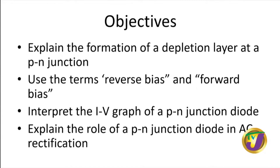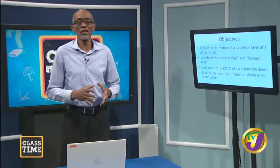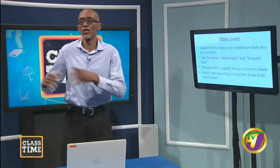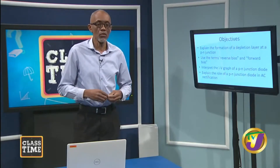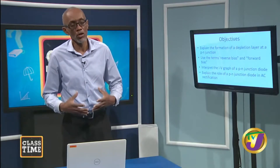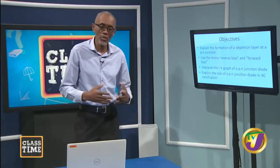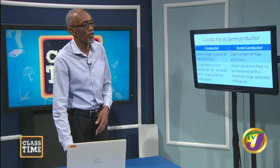First of all, we want to define a semiconductor. The word semi suggests half — half conductor, or semi suggests part conductor. So when we talk of a semiconductor, we're talking of a material that is not a full conductor. It has some properties that differ from conducting materials. So let's look at some of these differences.